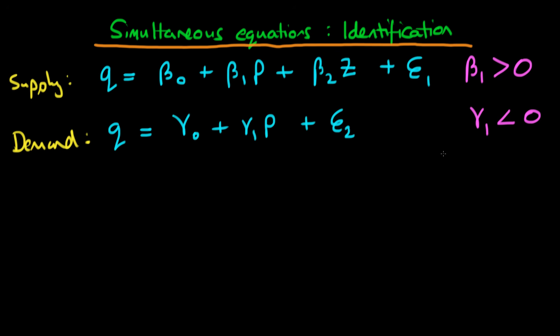You might ask yourself: can we actually identify the parameters beta 1 and gamma 1 econometrically, given data on Q, P, and Z? Well, first of all we can't use OLS on these systems because we know it's going to be both biased and inconsistent. So what we could do is use Z as an instrument for price in the second equation.